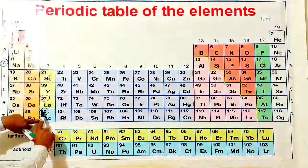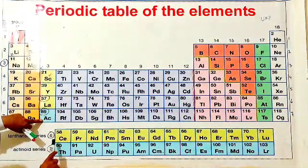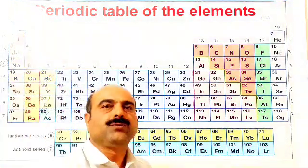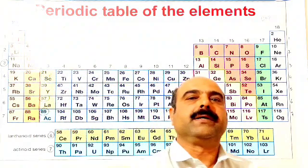A series of 14 elements which follow actinium atomic number 89 is called actinide series. These were all about periods in periodic table.